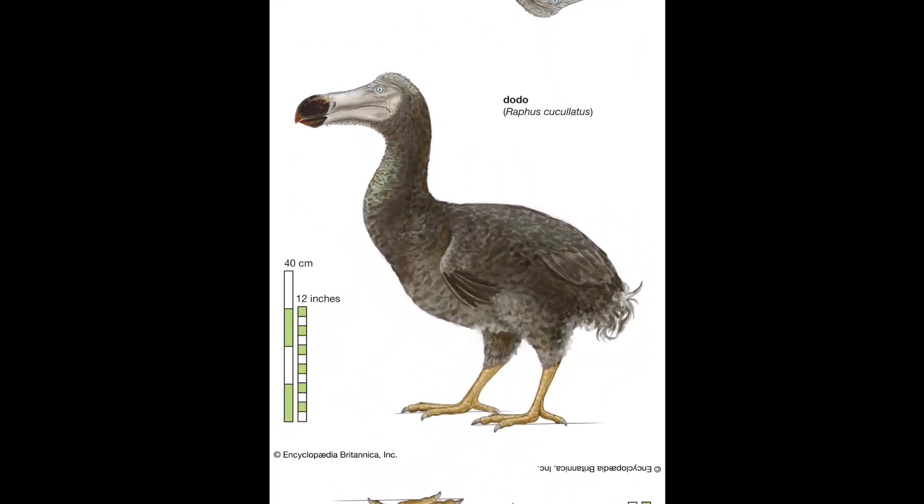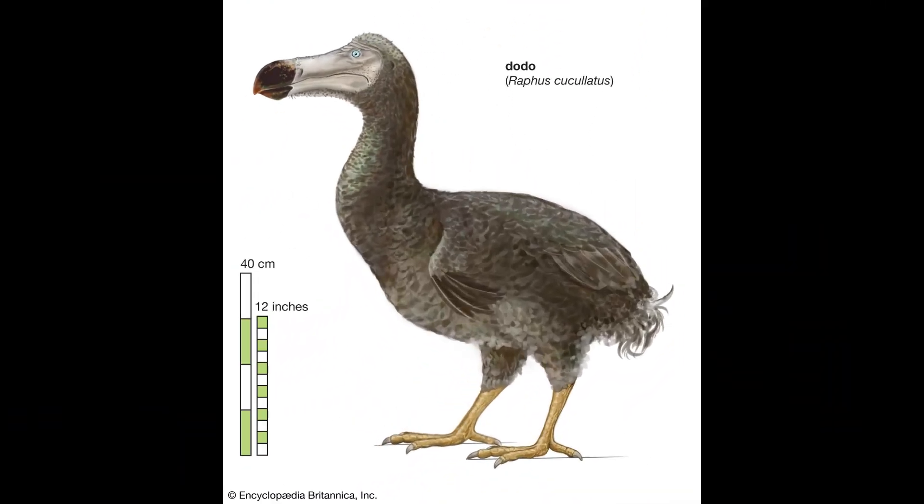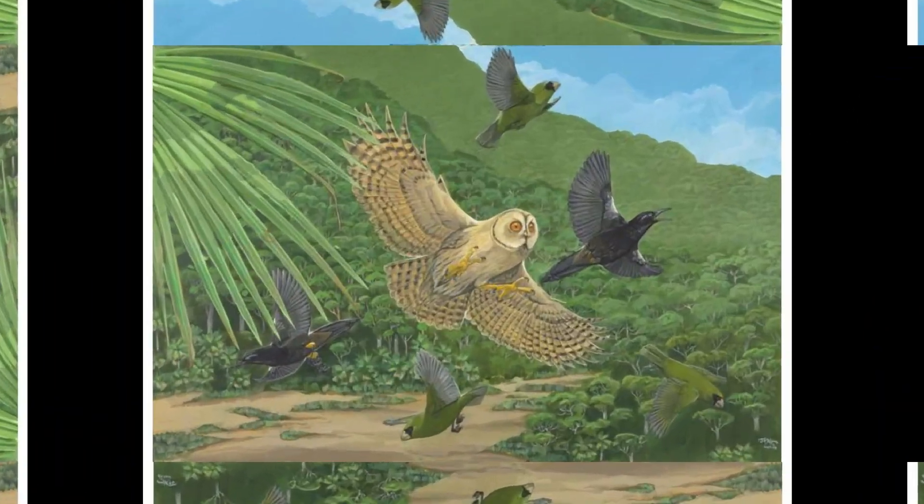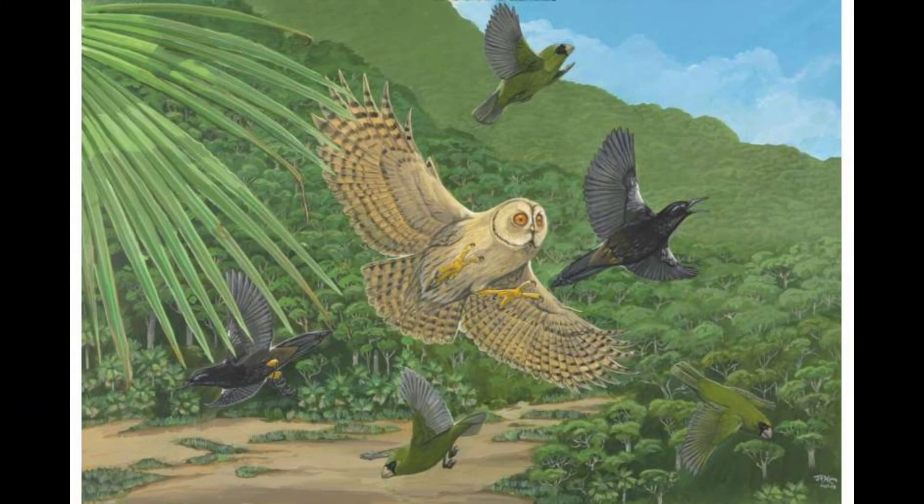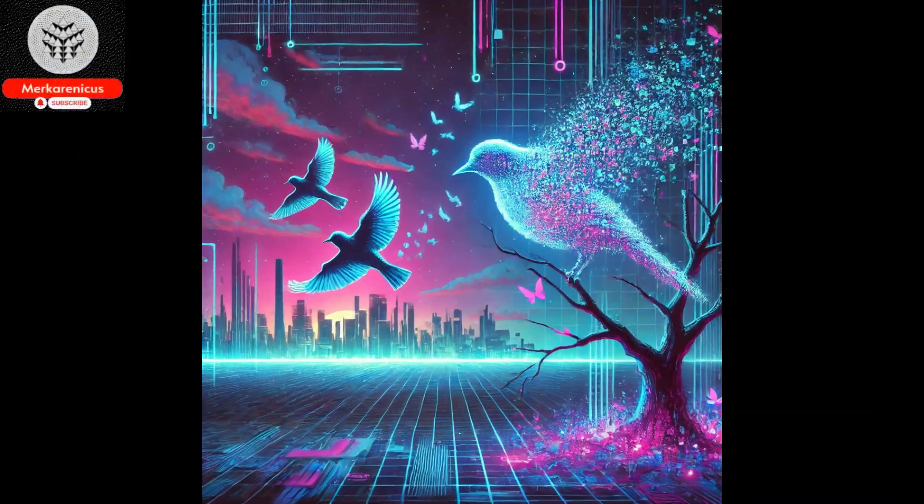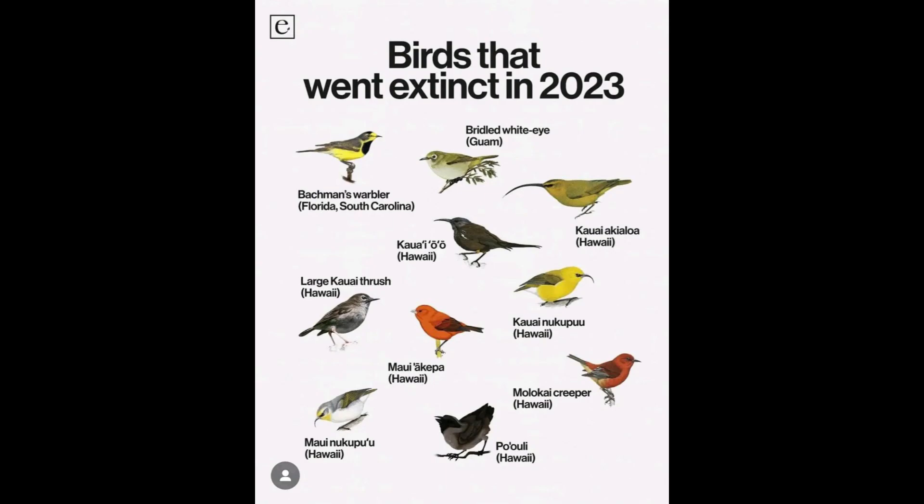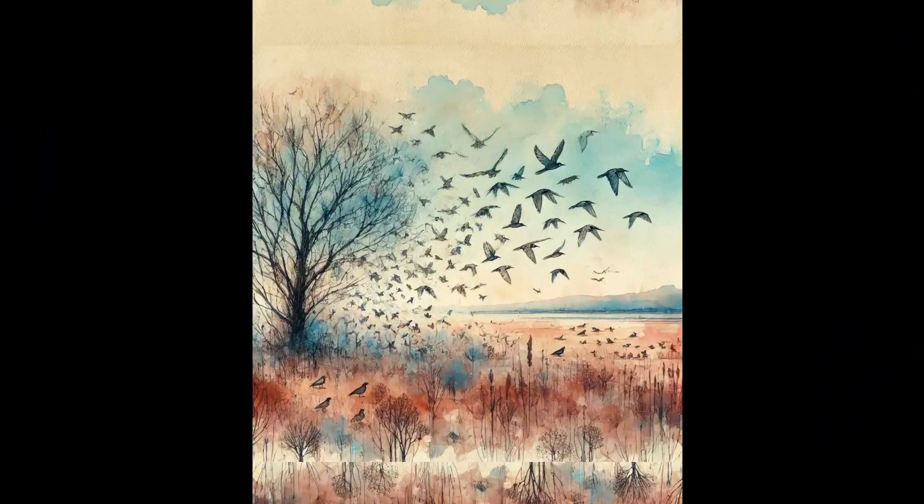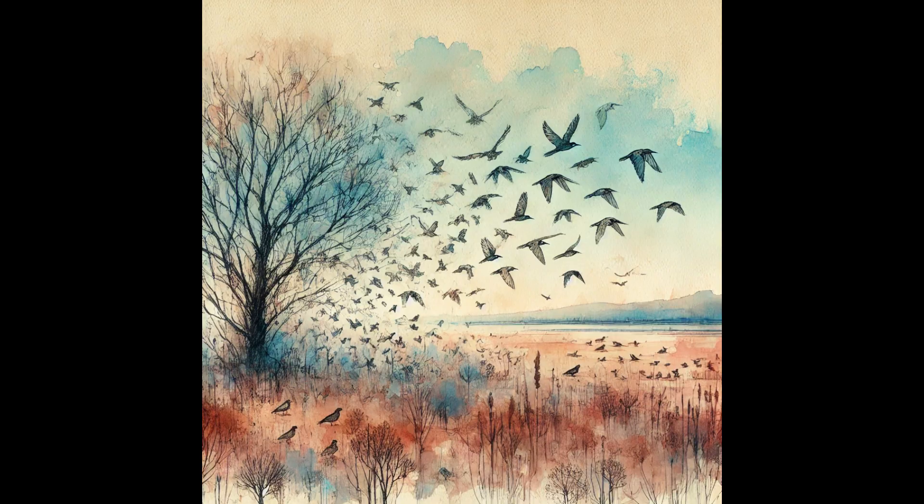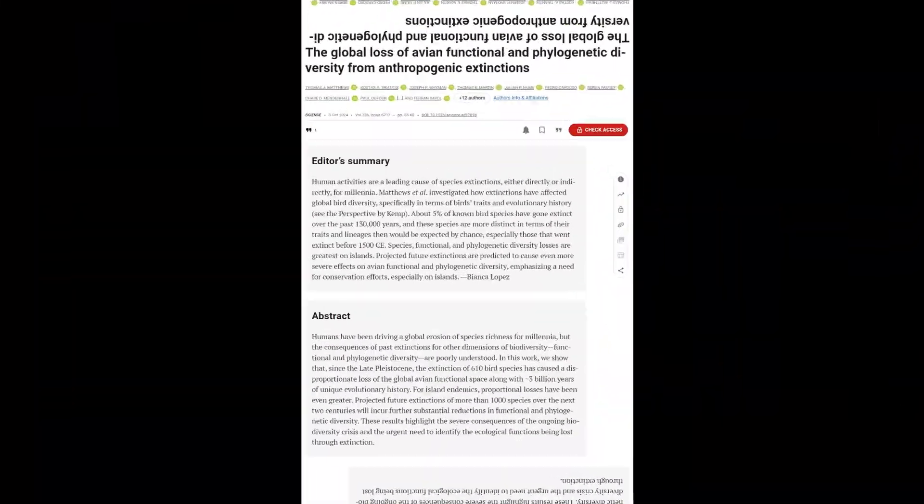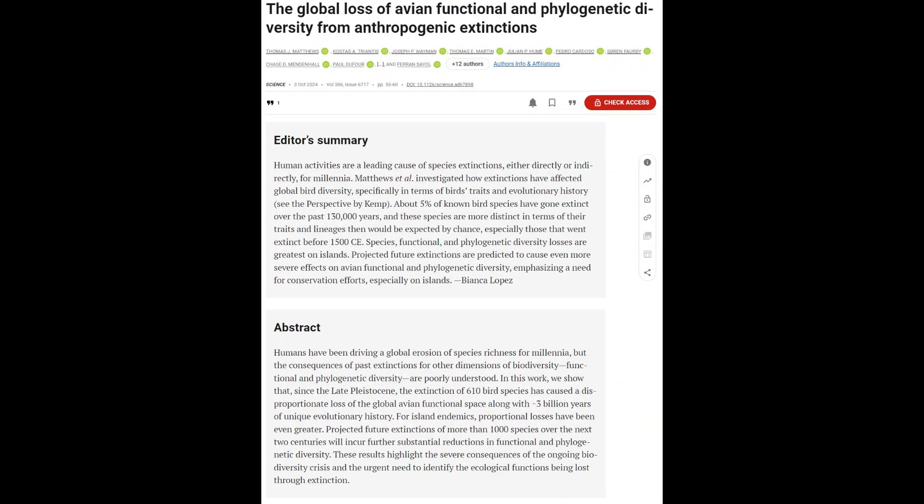Dr. Matthews emphasizes the findings serve as a timely reminder that the ongoing extinction crisis extends beyond mere species counts. The research reveals declines in both avian functional and phylogenetic diversity resulting from human activities, underscoring the critical necessity to comprehend and forecast the effects of historical anthropogenic extinctions on ecosystem functionality.